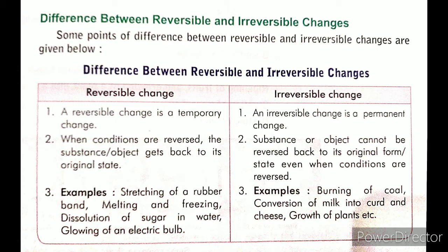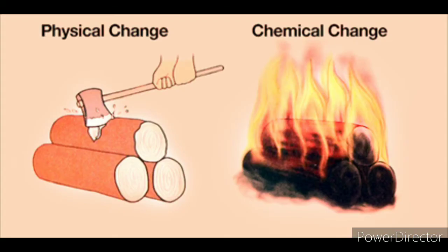If we look at examples, a reversible change example is stretching of a rubber band, melting and freezing, and sugar dissolving in water. For irreversible changes, examples include coal burning and milk changing into curd. Now, children, the next topic is physical and chemical changes.